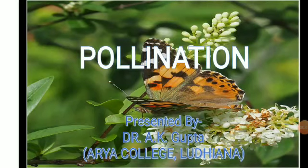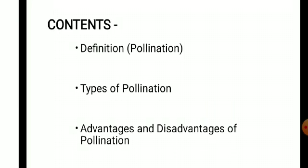Dear students, our today's topic is pollination. Pollination, as you all know, is one of the most important phenomena for the completion of the life cycle of an angiosperm or a plant. Because without pollination there can be no fertilization or sexual reproduction, no fruit formation and no seed formation. In this topic we will discuss what is pollination, types of pollination, and the advantages and disadvantages of pollination.